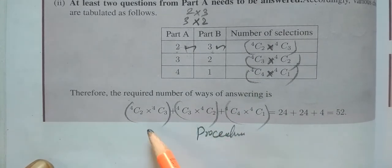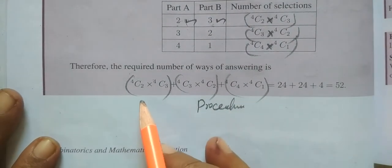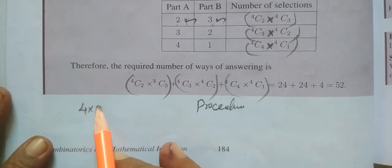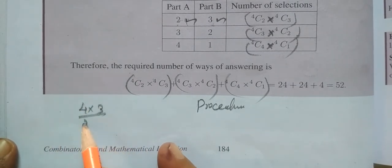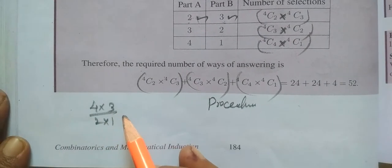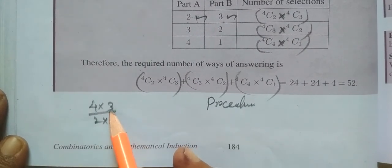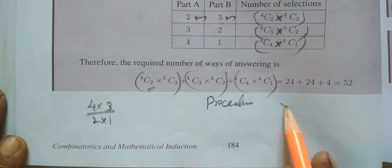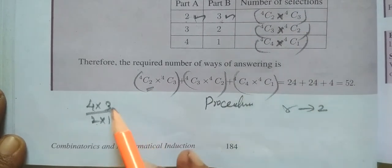Calculation: 4C2 equals 4 into 3 by 2 into 1. There is 2 for the initial, and 2 for the second.